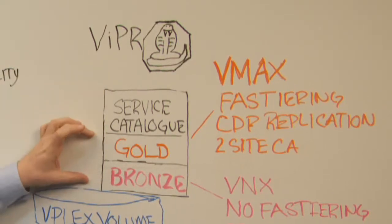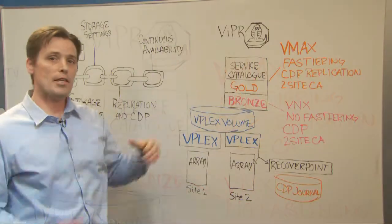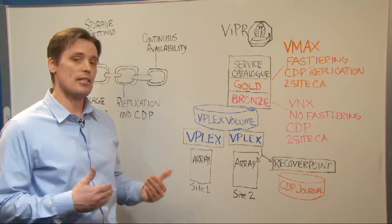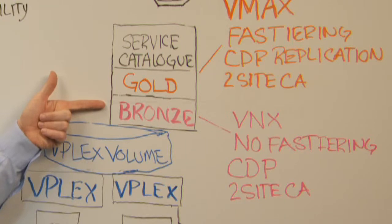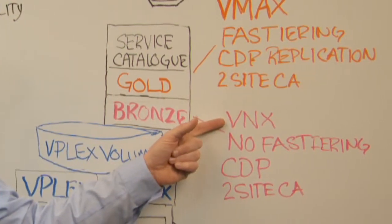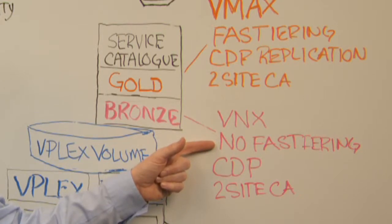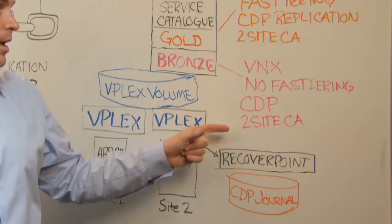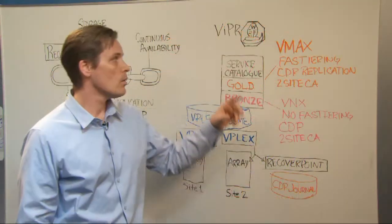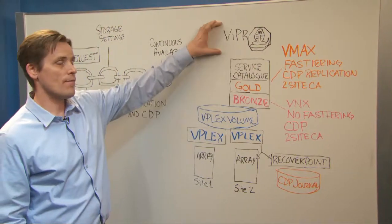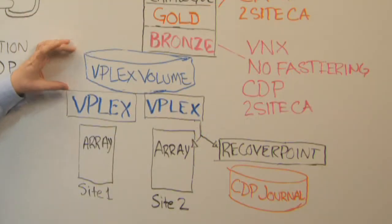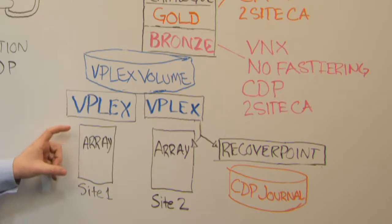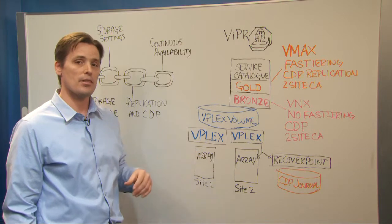This service catalog has predefined levels of service for a storage element. In this case, we might have a customer that wants to provision application storage for a test and dev environment, so they're going to set up a bronze level of storage. This bronze level of storage might be on a VNX array, without any fast-tiering specified, that uses continuous data protection for replication, and that is mirrored across two sites for continuous availability. When that profile is specified, Viper instructs vPlex to create the volume on the VNX arrays. vPlex then, following Viper's instruction, mirrors that data between two arrays at two sites, as was specified in the profile.